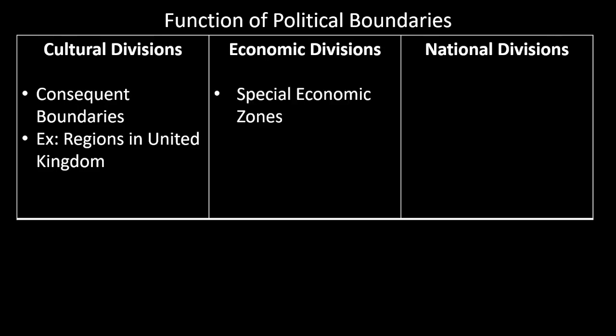We also see economic divisions. An example is special economic zones, which we'll learn more about in Unit 7. These are areas where there are different laws for trade in a certain part of the country to boost economic growth and attract foreign direct investment. So laws can have boundaries — in certain areas you can see certain laws, special economic zones impacting development, growth, wealth, and GDP.